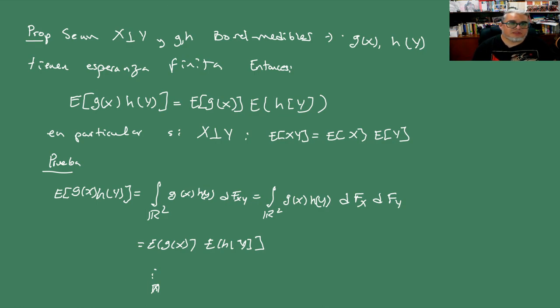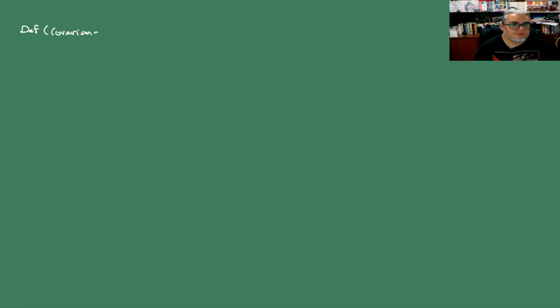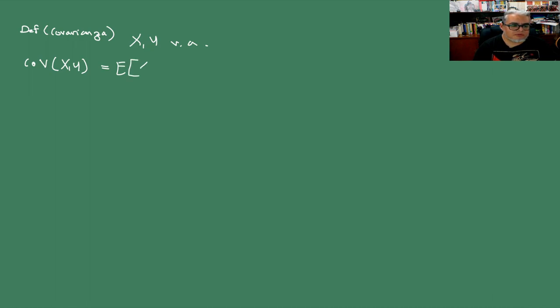Vamos a ver otra propiedad que se llama la covarianza. Llamaremos Cov(X,Y) a la covarianza de X y Y, que es la esperanza de (X − E[X])(Y − E[Y]).